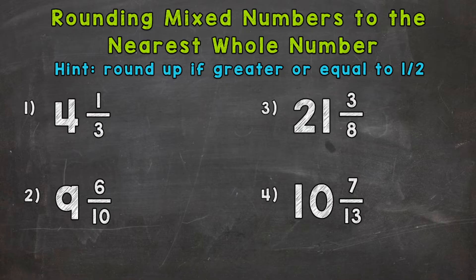So let's jump right into number one, where we have four and a third. Now, the most important part of this video is this hint right here. So when we're taking a look at mixed numbers, we need to take a look at the fractional part to see if we round up or stay the same as far as that whole number goes. So if the fractional part is greater or equal to a half, then we round up. If it's less than a half, then we stay the same.